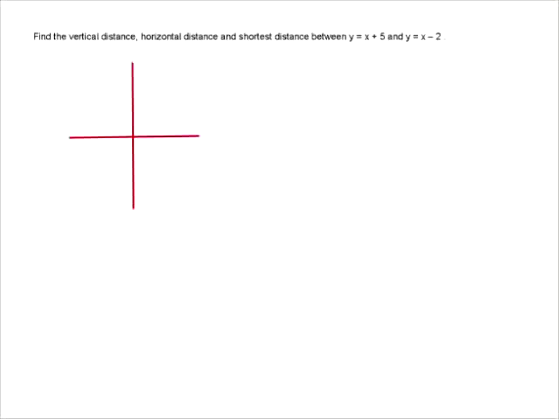So let's use this in this example: find the vertical distance, horizontal distance, and shortest distance between these two lines, which are parallel. We'll do a little sketch — I'm going to draw a coordinate system. I'll have a point at negative two and at five, with a slope of one. I'm just going to sketch two lines that are approximately parallel.